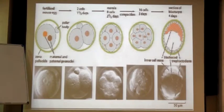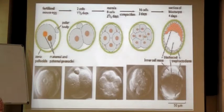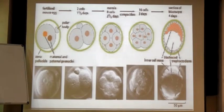Once these two particular gametes are ready through your gonads — when you say gonads, you are talking about testes and ovaries — the next step has to be fertilization. It will depend on what kind of animal it is, whether it is choosing sexual or asexual reproduction. When you are talking about sexual reproduction, you need to have a fusion of your gametes.